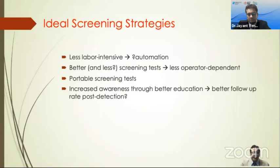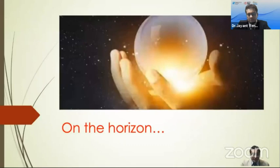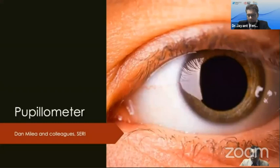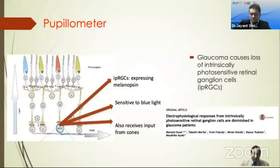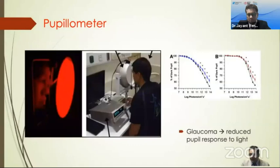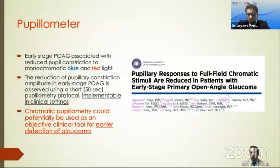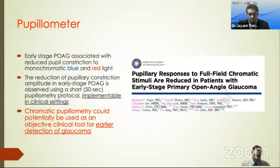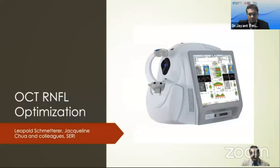Ideal screening strategies should be less labor-intensive, with better and more portable screening tests, and increased awareness of the condition through better education. Diane Mealy and colleagues in Surrey are looking at using a pupillometer to assess pupillary response to light in detecting early glaucoma. This is because glaucoma causes loss of intrinsically photosensitive retinal ganglion cells, and they found reduced pupil constriction when exposed to monochromatic blue or red light in early-stage glaucoma. However, the tool is very chunky, not portable, and still in its research phase — but it could be an interesting strategy.